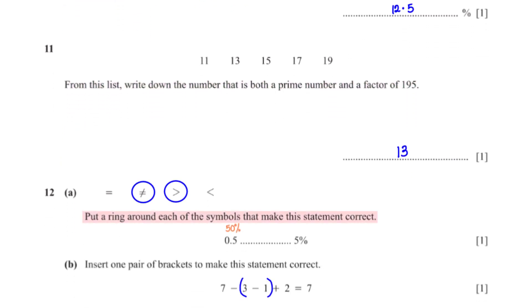Put a ring around each of the symbols that make this statement correct. To be able to compare the two numbers, we convert 0.5 to a percentage by multiplying 0.5 by 100%, giving us 50%. Based on this, we can say that 50% is not equal to 5%, and we can also say that 50% is greater than 5%.